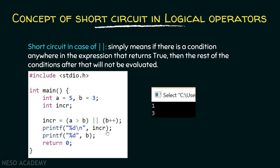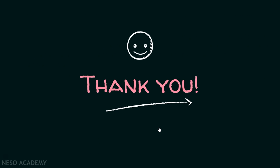1 for incr because the expression is true, and 3 for b because its value was not incremented. Thank you for watching this lecture.